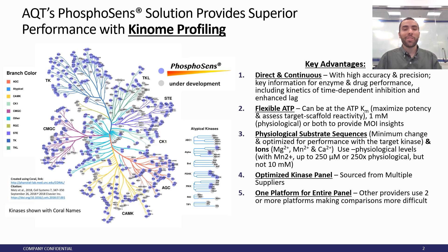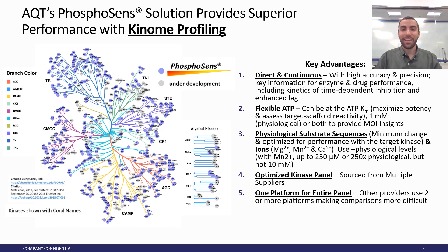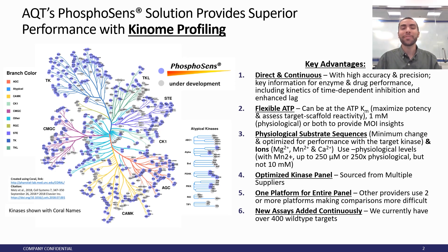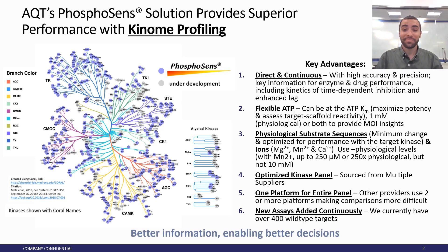Additionally, we use one platform across the entire panel. This is not some Frankenstein panel taking different assays together trying to compare results — we use PhosphoSense for the entire panel. It leads to very consistent data. We currently have over 400 wild-type kinases in the panel and we're adding more every day, offering a wide breadth of kinases from all the different families. All of this enables better decisions for your drug discovery process.